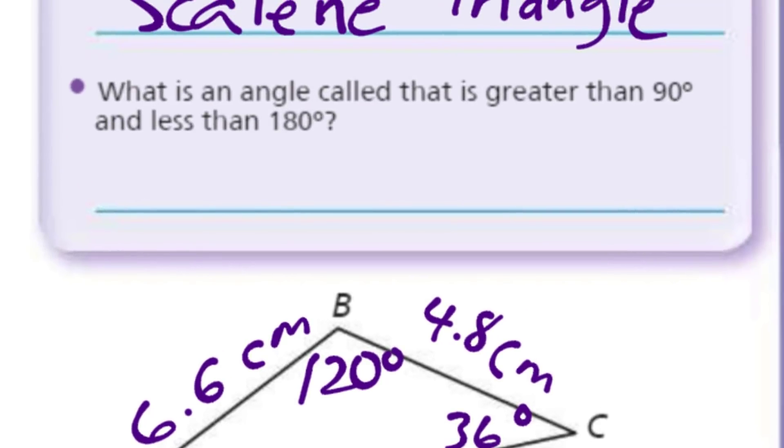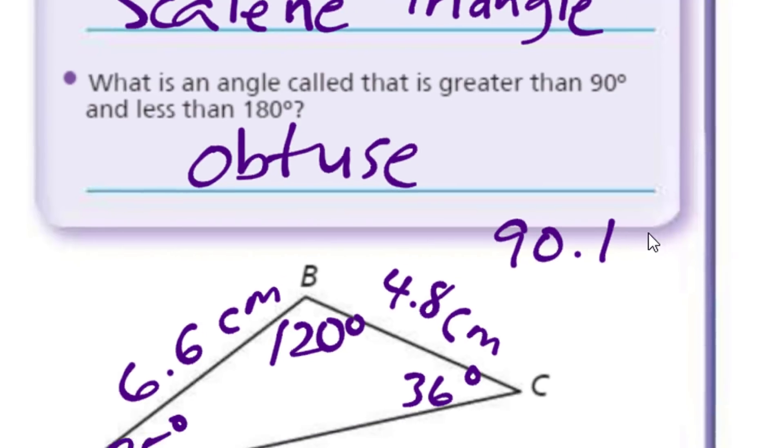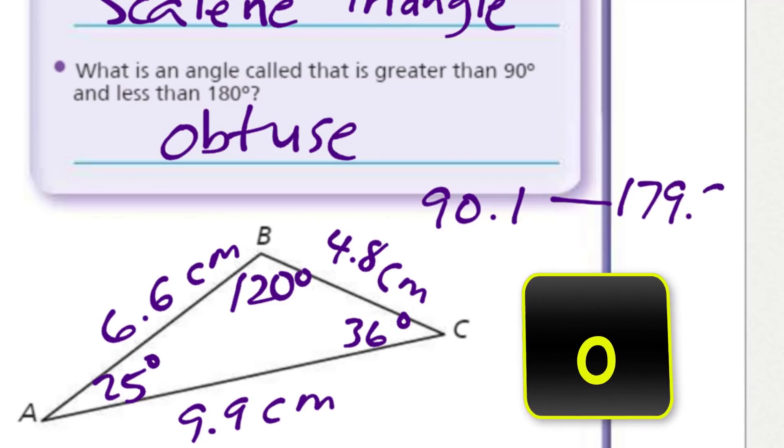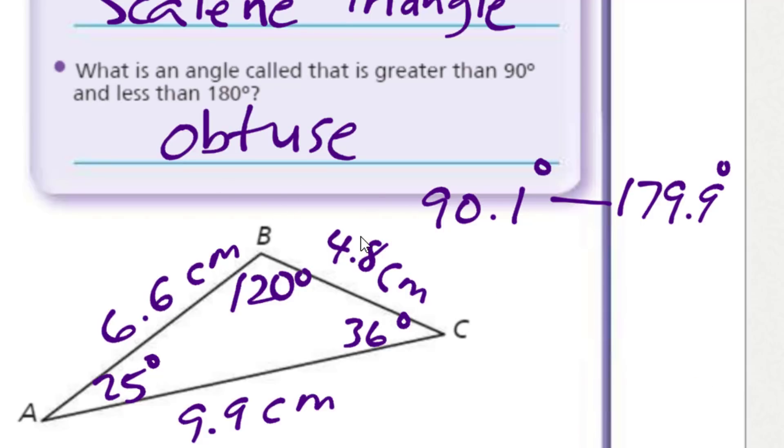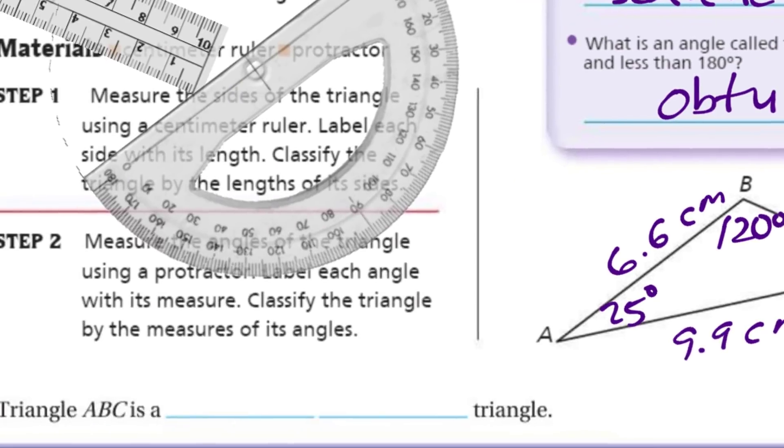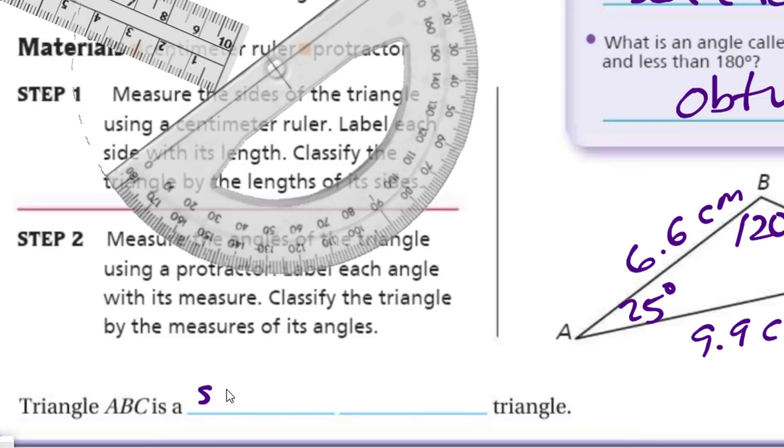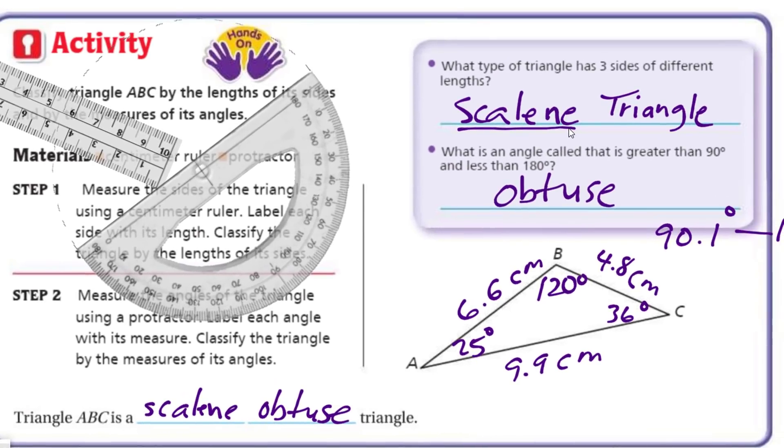So here we have 26, or 25 actually. This was 36, and this was 120. There we go with our numbers. Now it says, what is an angle called that is greater than 90 degrees and less than 180? That one is an obtuse angle. So it's greater than 90, which means it could be 90.1, all the way over up until 179.9 degrees. So that's the range of an obtuse angle. And we already talked about the one that's less than 90, and it's cute because it's little, it looks cute. Triangle ABC is a scalene obtuse triangle. Scalene because none of the sides are the same, and obtuse because it had one angle that was greater than 90 degrees.